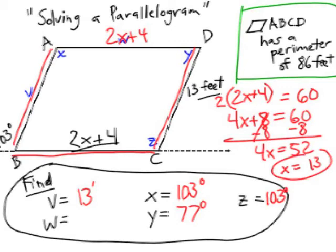x equals 13. Now I need to substitute it in and figure out what that is. 2 times 13 is 26, plus 4 is 30. So W is 30. Nice job.